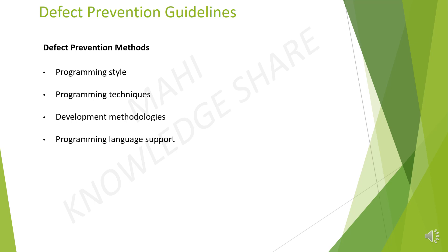The last method is code analysis. Tools for code analysis help developers by inspecting the program text beyond the compiler's capabilities to spot potential problems. Although in general, the problem of finding all programming errors in a given specification is not solvable. These tools exploit the fact that human programmers tend to make the same kind of mistakes when writing software.